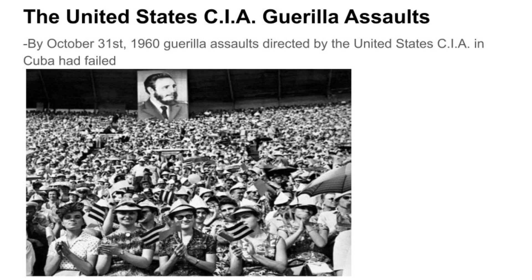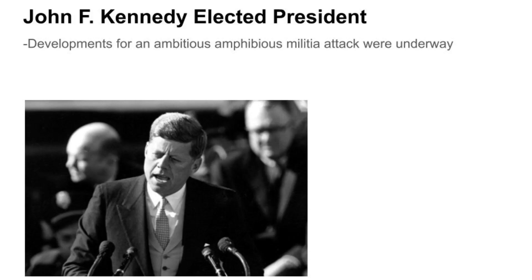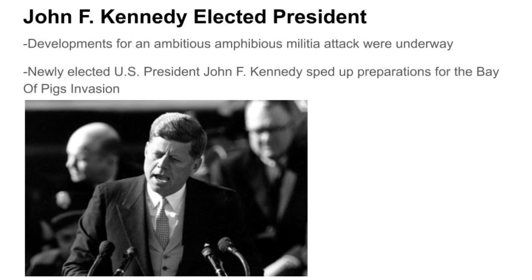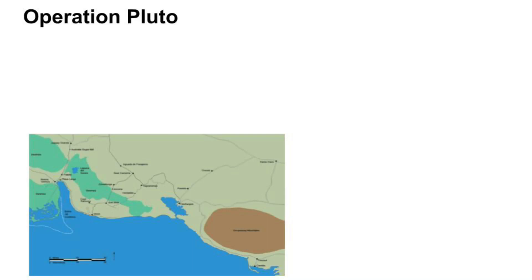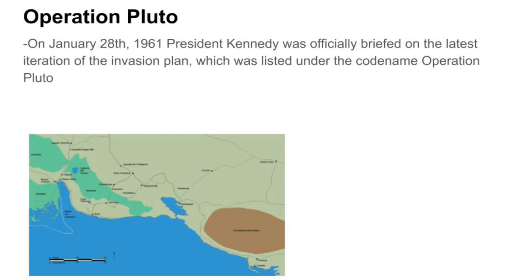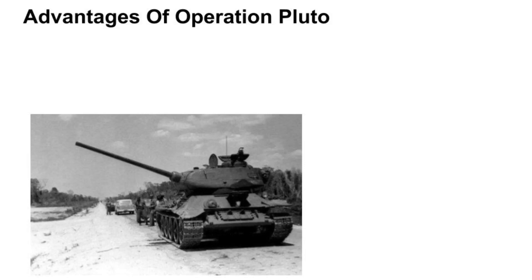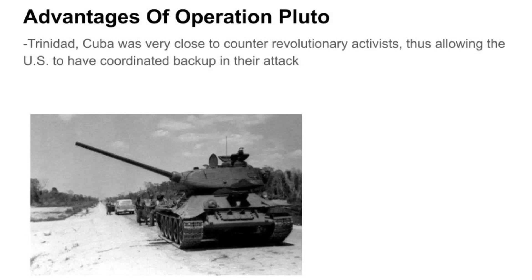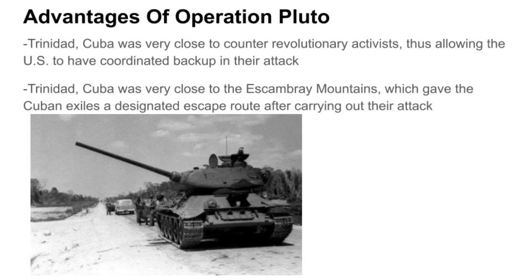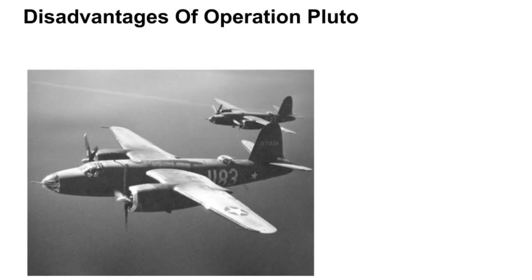By October 31, 1960, guerrilla assaults directed by the CIA in Cuba had failed. Developments for an ambitious amphibious attack were underway as newly elected President John F. Kennedy sped up preparation efforts. On January 28, 1961, Kennedy was officially briefed on the latest iteration of the invasion plan, code-named Operation Pluto. Operation Pluto planned to land a thousand Cuban exiles in Trinidad, Cuba, at the foothills of the Escambray Mountains. Trinidad was very close to counter-revolutionary activists and provided an escape route into the mountains.